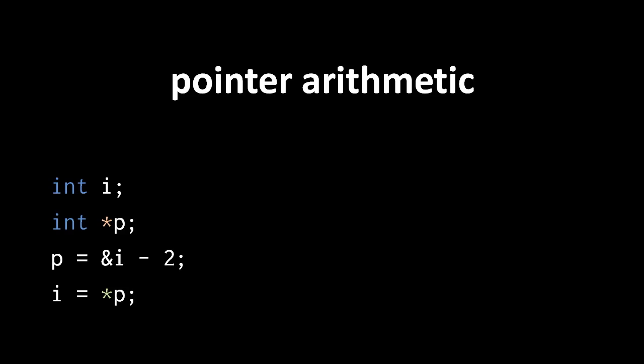Regardless, this dereference will read the bytes at the represented address as an int value and copy that int value to the variable i. Likewise, we can assign to the dereference of pointers produced by pointer arithmetic. This copies the int value 6 to the bytes located at the address pointed to by p, wherever that may be in memory.